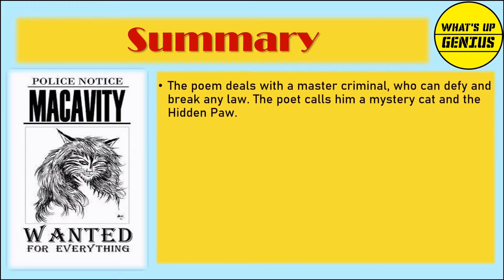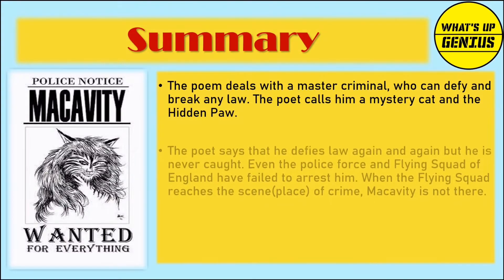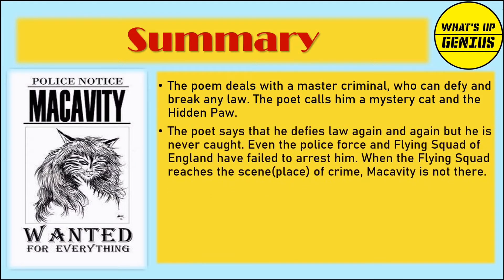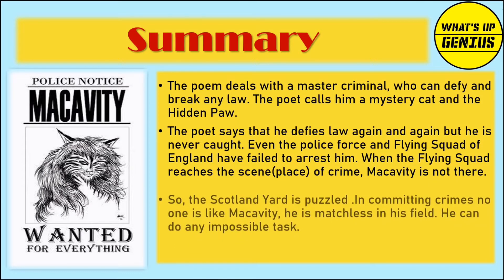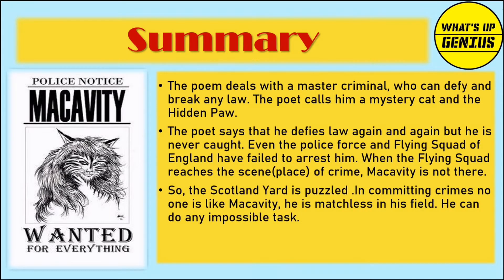The poem deals with a master criminal who can defy and break any law. The poet calls him a mystery cat and the Hidden Paw. He defies the law again and again but is never caught. Even the police force and flying squad of England have failed to arrest him. When the flying squad reaches the scene of crime, Macavity is not there, and Scotland Yard is left puzzled.